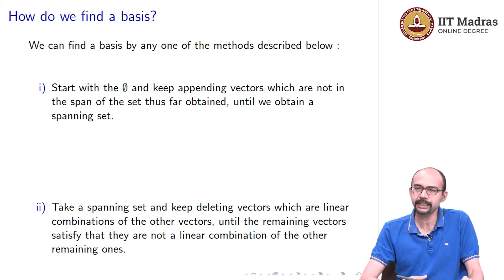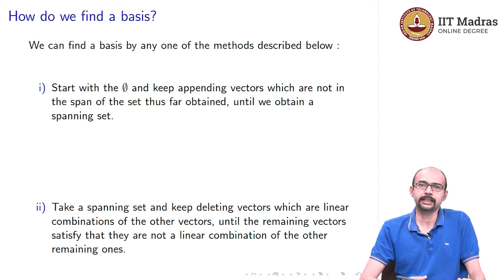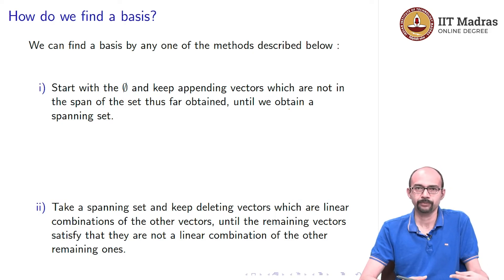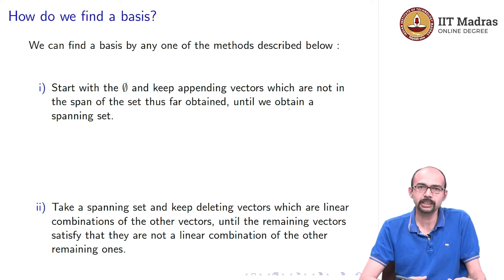Similarly, Method 2: you can take a spanning set — take a very large set with lots of vectors, so it is very likely to be a spanning set. Then, within this set, you see which vectors can be written as linear combinations of the other vectors. If there is such a vector, you delete it and keep doing this process. Keep checking for a vector that you can write as a linear combination of the others, and if you find one, delete it. Slowly your set will grow smaller, and once you reach a place where you cannot delete any vector, your set is linearly independent and already spanning — that means it is a basis.